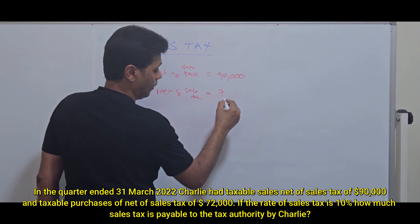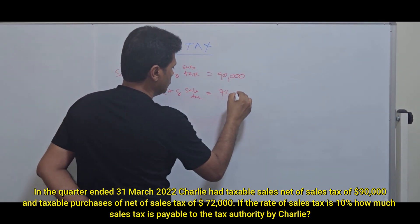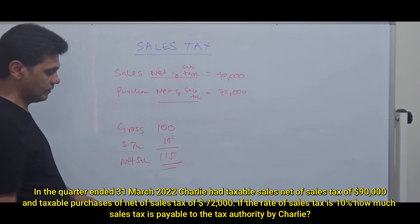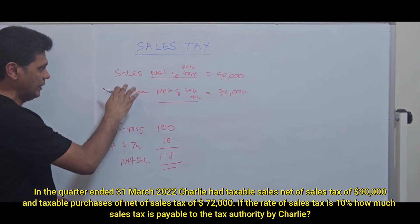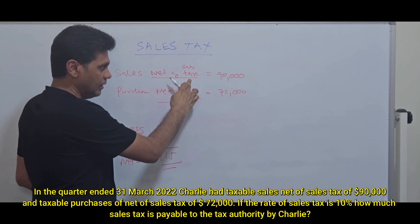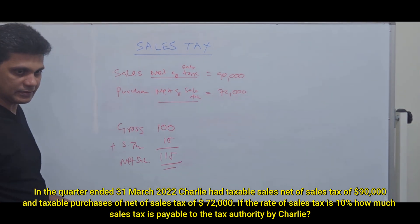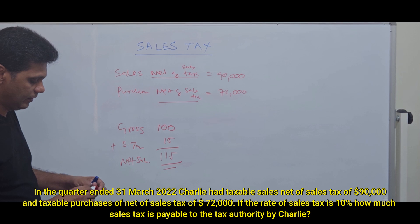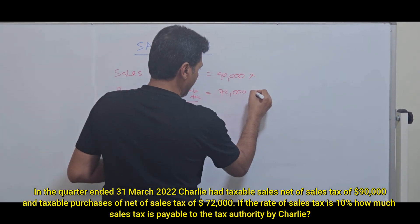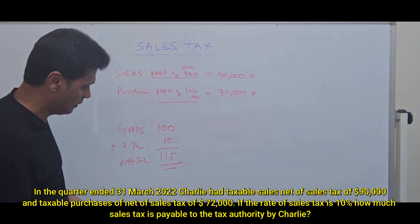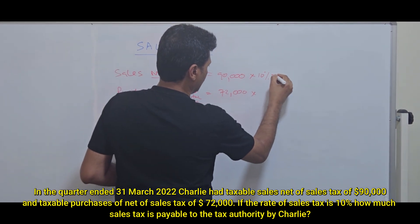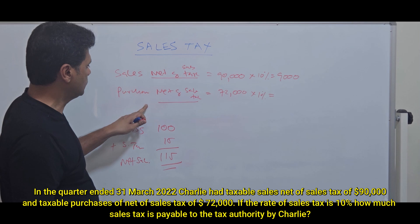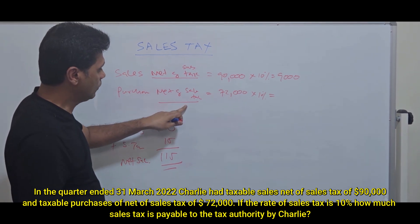Net of sales tax means $90,000 is excluding the tax — this is the gross sales amount, and you are adding the sales tax on top. The tax rate is 10%, so it's straightforward. $9,000 is the payable output tax. And the input tax on purchases — $72,000 is also net of sales tax, meaning $72,000 is gross purchases.